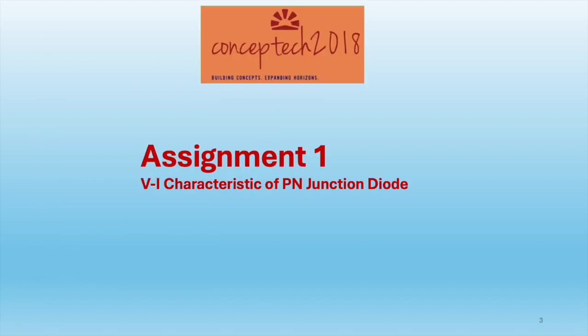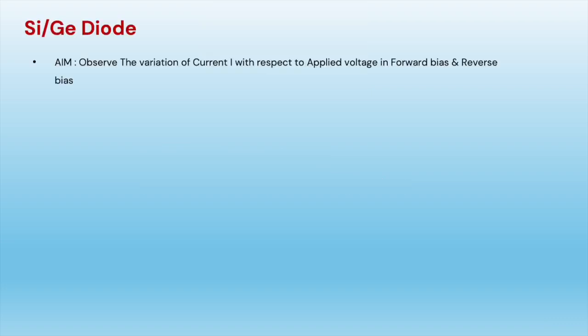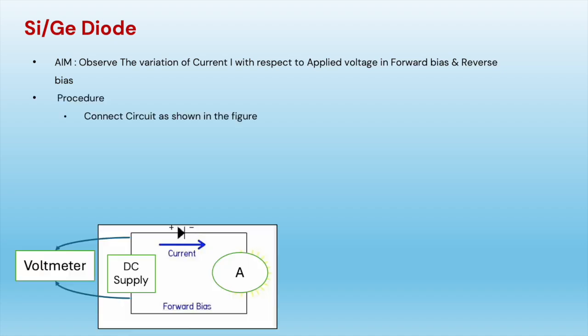The first assignment is VI characteristics of PN junction diode. In the experiment, we have to observe the variation of current with respect to applied voltage in forward and reverse bias in the diode.